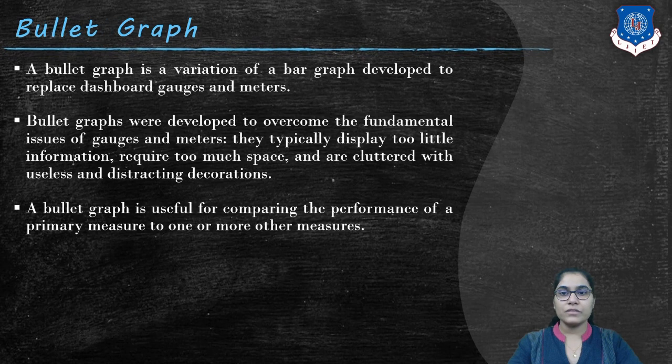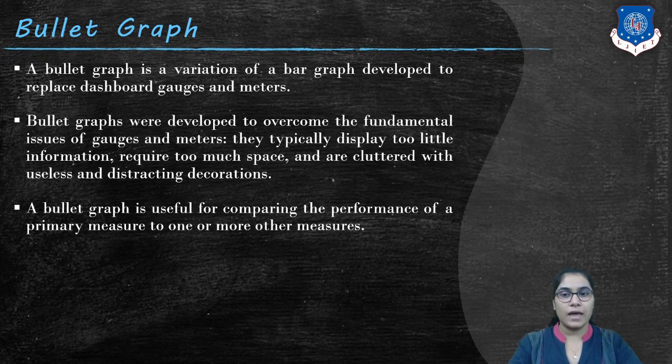A bullet graph is a variation of a bar graph developed to replace dashboard gauges and meters. Bullet graphs were developed to overcome the fundamental issues of gauges and meters. They typically display too little information, require too much space, and are cluttered with useless and distracting decorations. And that's the reason that the bullet graph is called as display chunks in dashboard design.